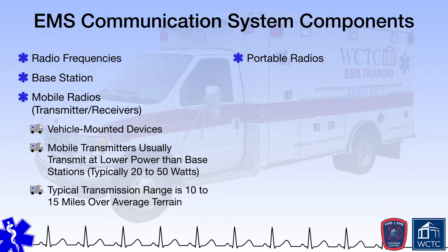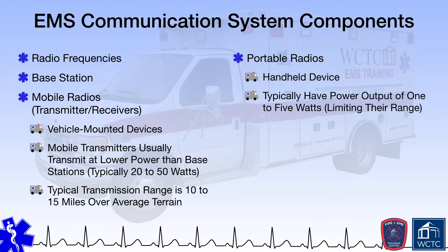Individual portable radios are the last major component of a comprehensive radio communications system. These are battery-powered, handheld devices carried by EMS providers with a power rating of 1 to 5 watts, which limits their range considerably when compared to a base station or an apparatus-mounted mobile radio. Coverage of 3 to 5 miles is common for these types of radios.